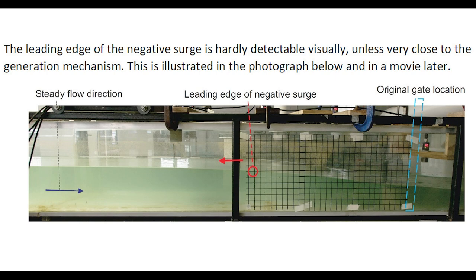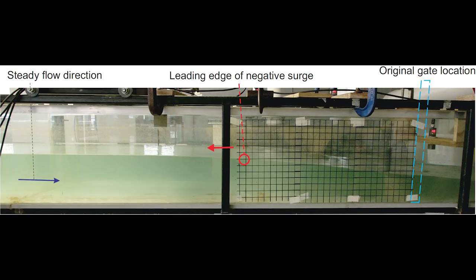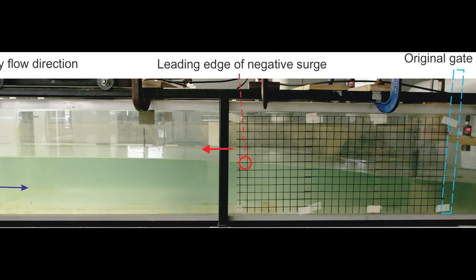The leading edge of the negative surge is hardly detectable visually, unless very close to the generation mechanism. This is illustrated in this photograph, and in a movie later. This high shutter speed photograph illustrates an instantaneous snapshot of a negative surge generated by the rapid opening of a downstream gate, with the surge propagating upstream against the initially steady flow. Despite the proximity of the gate, the leading edge of the negative surge is barely visible.